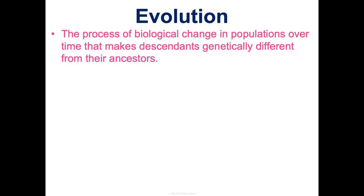Evolution is the process of biological change in populations over time that makes descendants genetically different from their ancestors. We're looking at biological change — change in living things — in populations, not just in organisms. An organism cannot evolve. Only a population can.